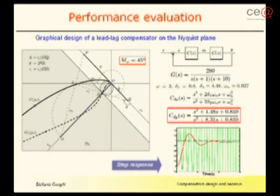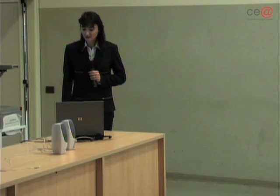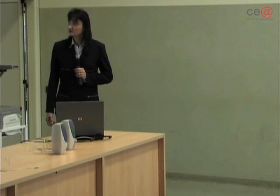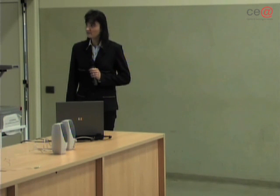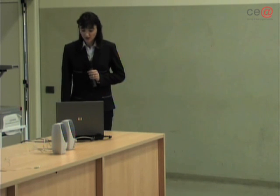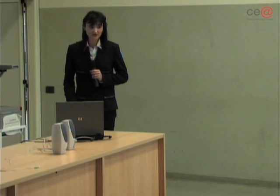Regarding performance evaluation, I reported a numerical example of lead-lag compensator design on the Nyquist plane. G(s) is the original system — it is unstable with an increasing oscillatory step response shown in green. C(s) is the lead-lag compensator designed with the inversion formula approach. The control system achieves a phase margin equal to 45 degrees as required by specifications, and its step response is shown in red. The improvement in overshoot and settling time is evident.